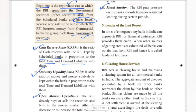In traditional functions, we have 4 functions. The fifth point is the Lender of Last Resort. In times of emergency, any bank in India can approach RBI for financial assistance.